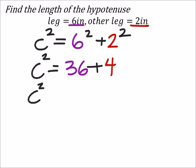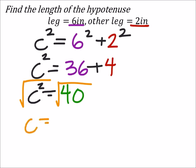So I get C squared equals 36 plus four is 40. Now, I've got a value that's squared, and it equals a number. So I need to get rid of the square, so that I just have that variable.